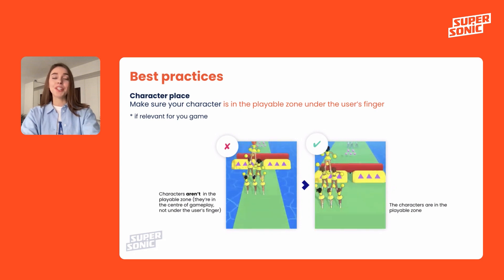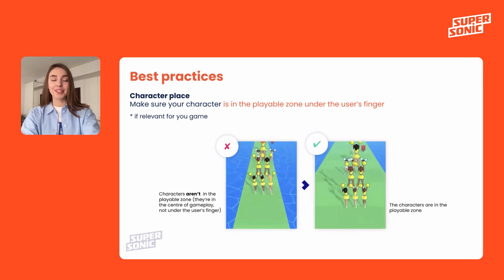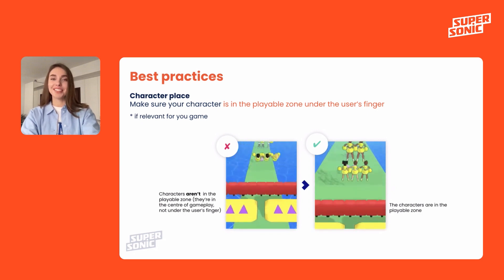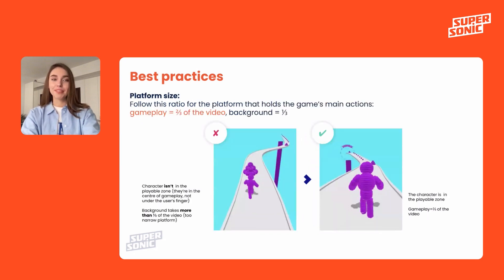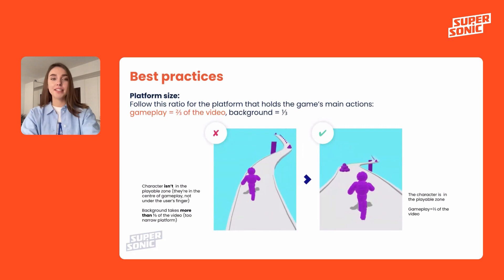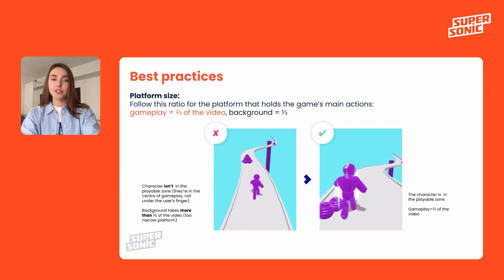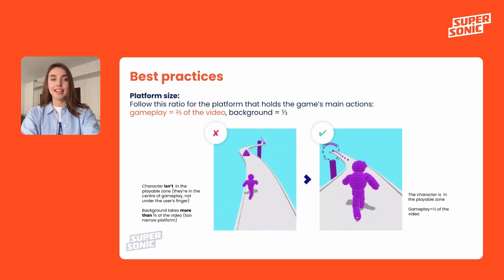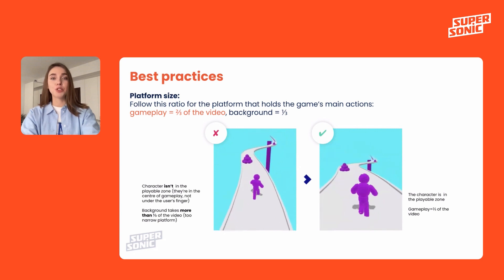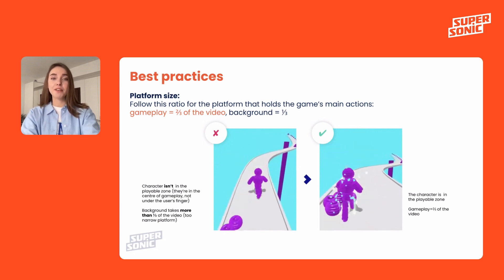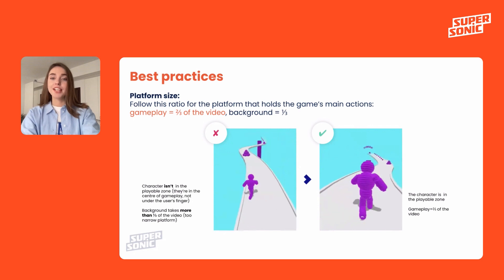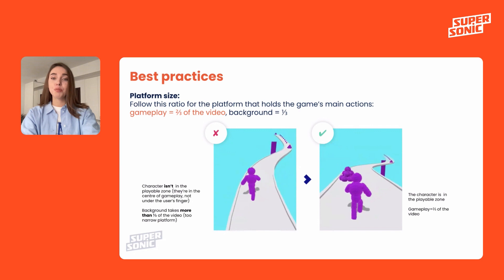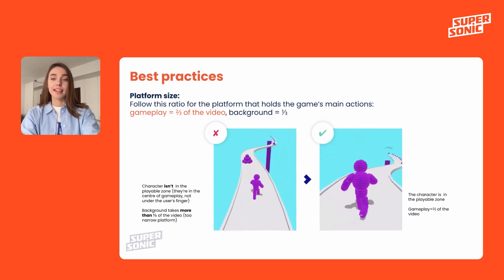The next point is character placement. Make sure your character is in the playable zone, which means under the user's finger. Regarding platform size, follow this ratio: the platform that holds the game's main actions should take up two-thirds of the video, and the background one-third.